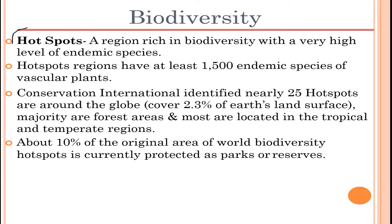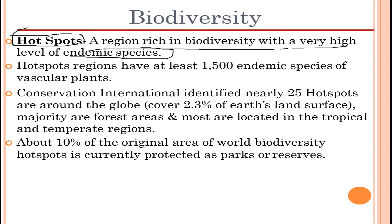Moving on, let's talk about hotspots under biodiversity. A hotspot is a region rich in biodiversity with a very high level of endemic species — many species that inhabit a particular region in a particular environment. Hotspot regions have at least 1,500 endemic species of vascular plants.